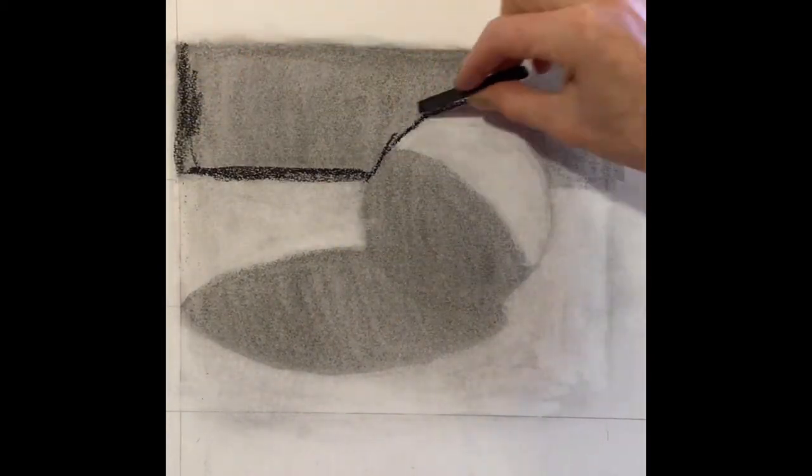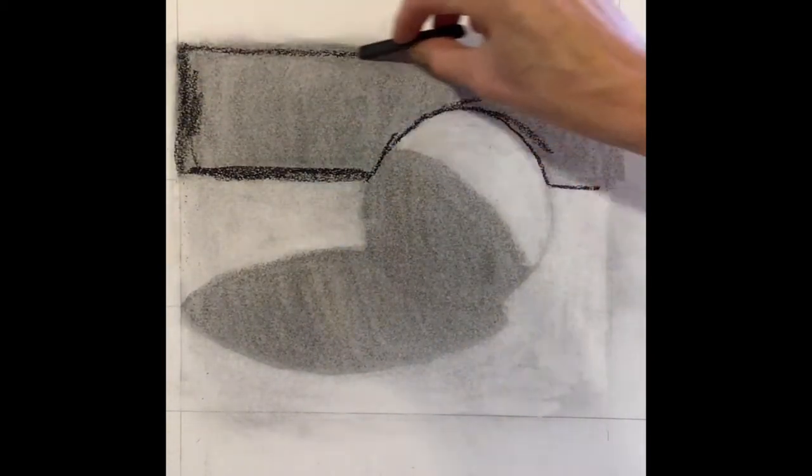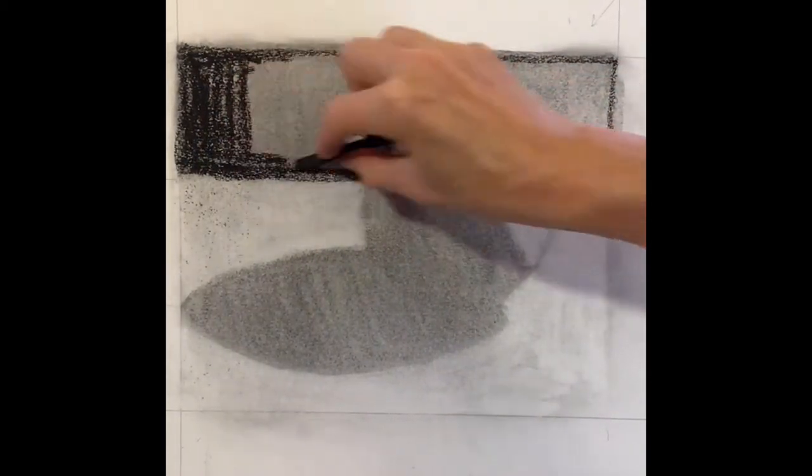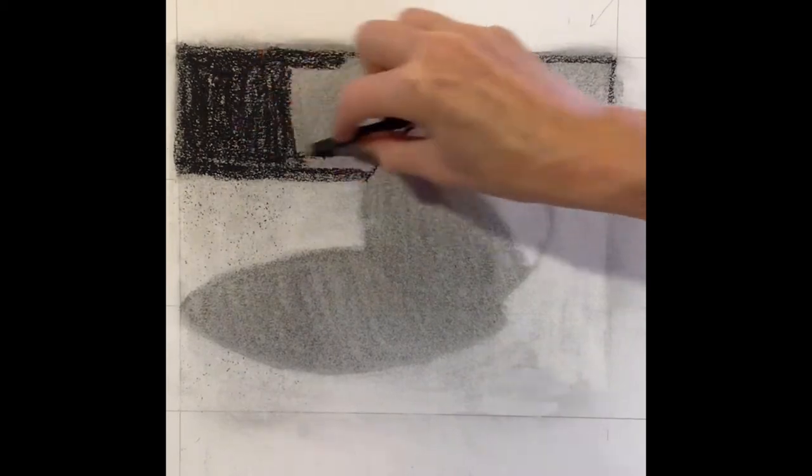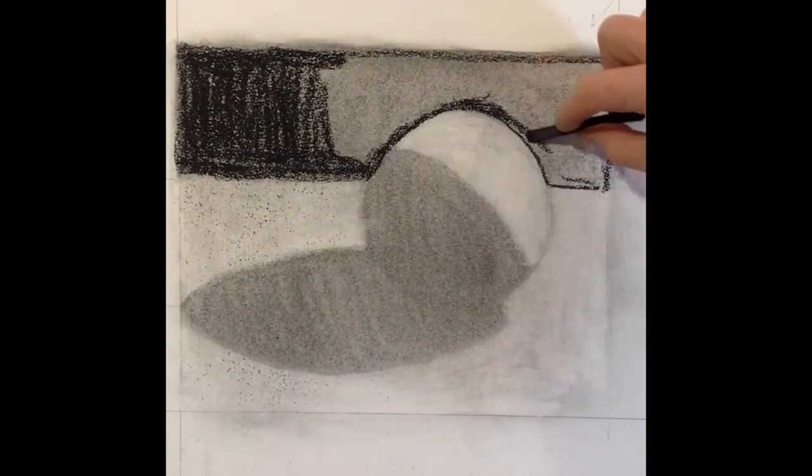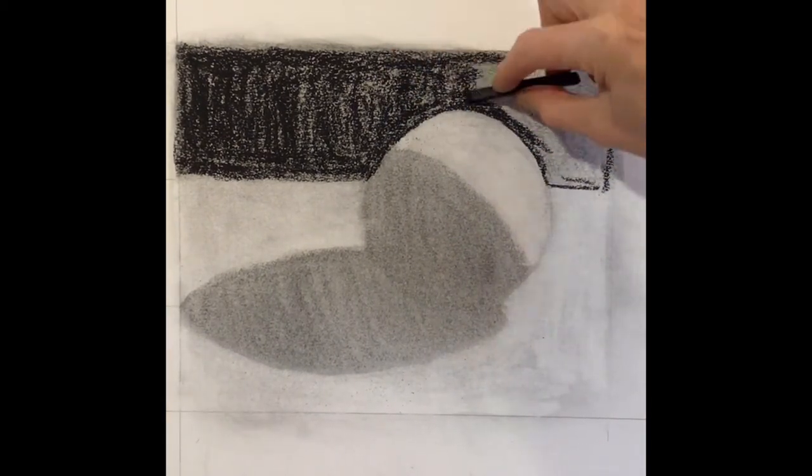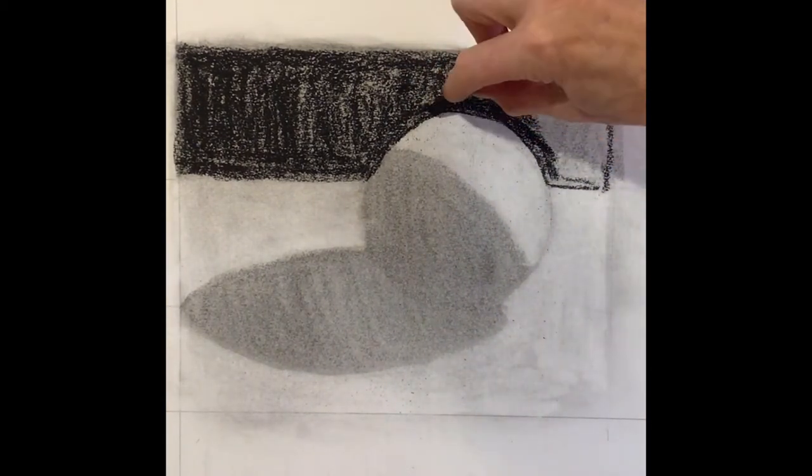I'm using my compressed charcoal to put in this black area behind the sphere. Remember, compressed charcoal won't get lighter when you rub it. It'll get darker. So it's great to have an area that's really black because you can pick up the charcoal and move it around the drawing.